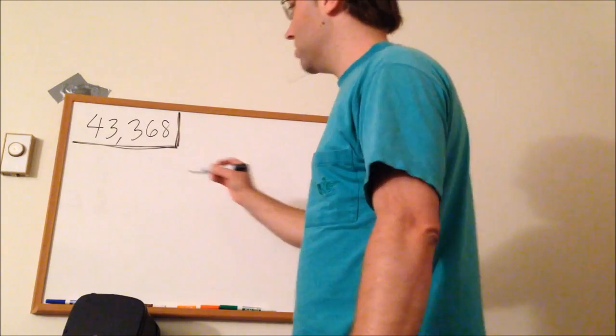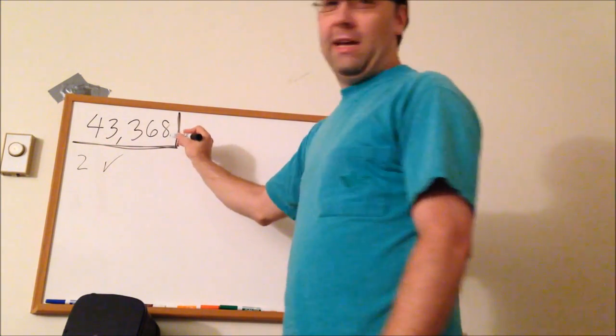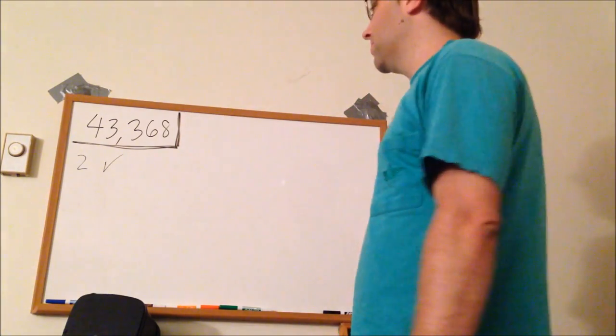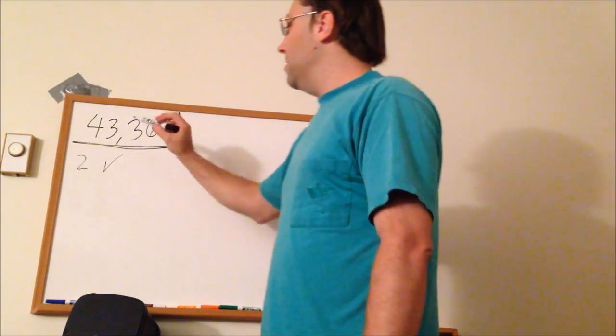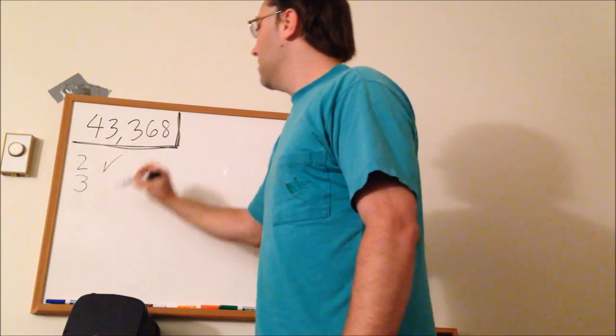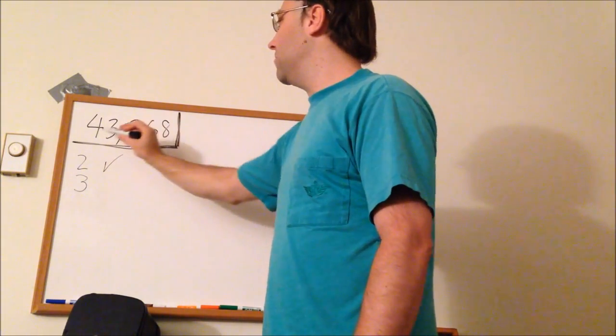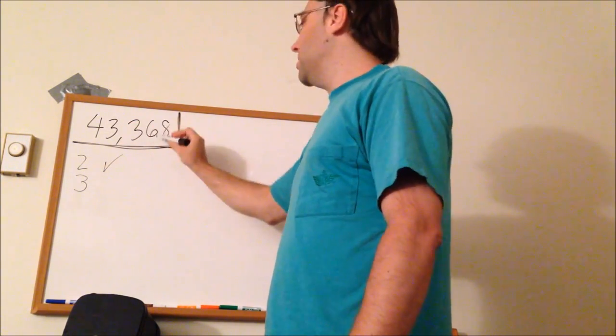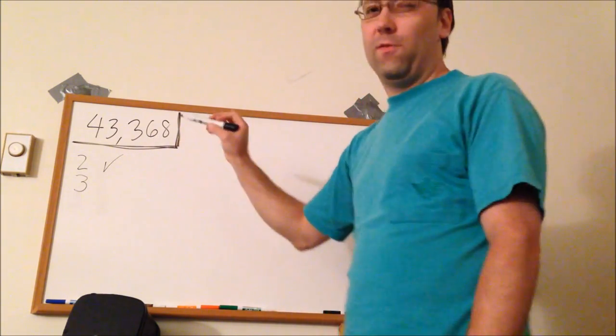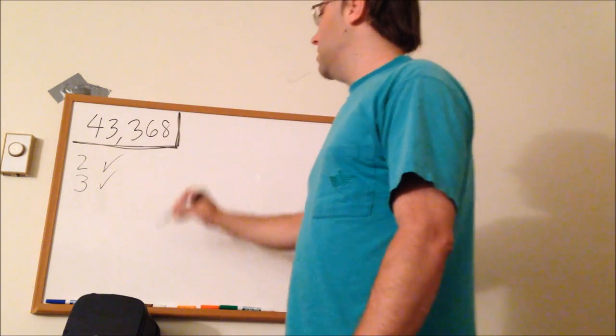The easiest one, 2 is very obvious. Check that because it ends in 8, so it's even. And any even number is divisible by 2. For 3, we add up the digits, the values of the digits. So 4 plus 3 is 7, plus 3 is 10, plus 6 is 16, plus 8 is 24, which is a multiple of 3. So check.